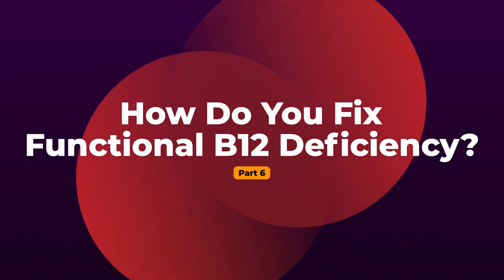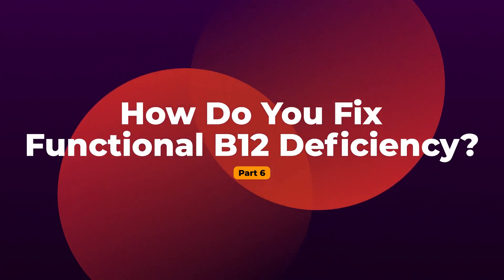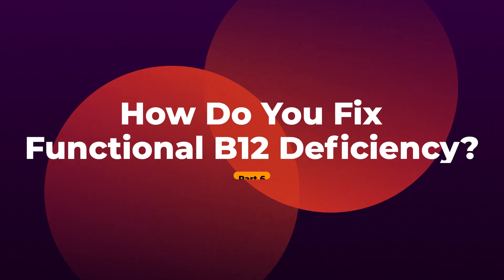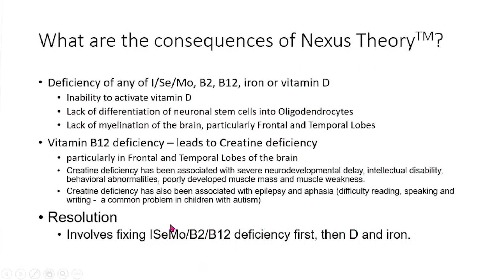So how do we fix it? I'll explain what I think goes on — how do you fix it? It involves fixing these deficiencies first, and then you can fix the vitamin D and iodine deficiency, and then hopefully start to get development to occur.